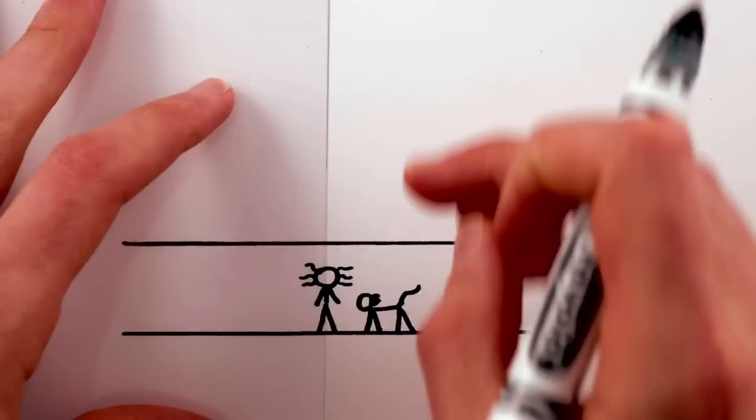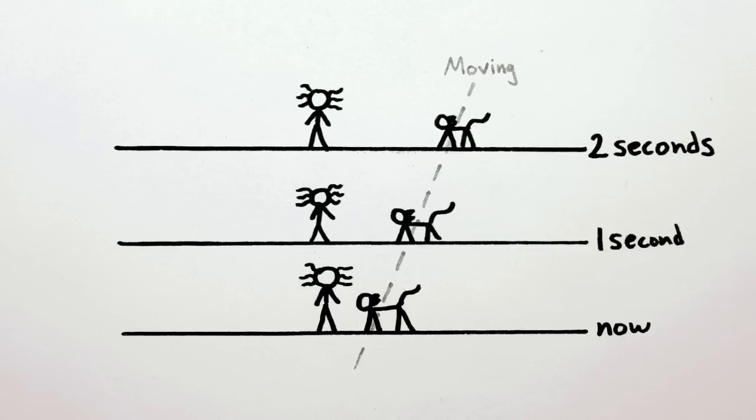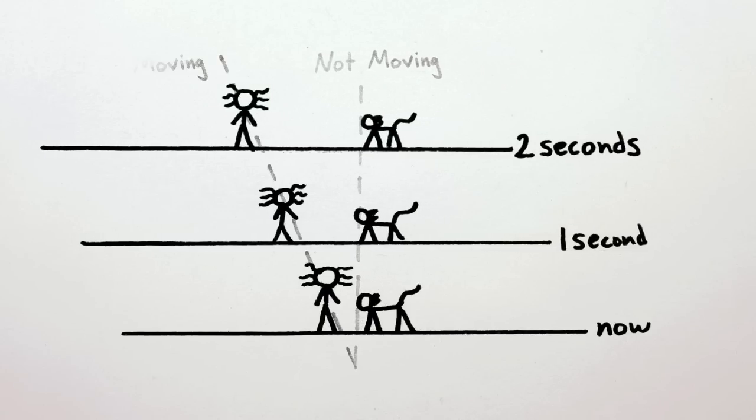Now before you complain that I'm exaggerating, check out this cat. You can clearly see that the cat is moving away from Einstein at a constant velocity. But do a little sliding switcheroo, and suddenly it looks like Einstein's the one moving.